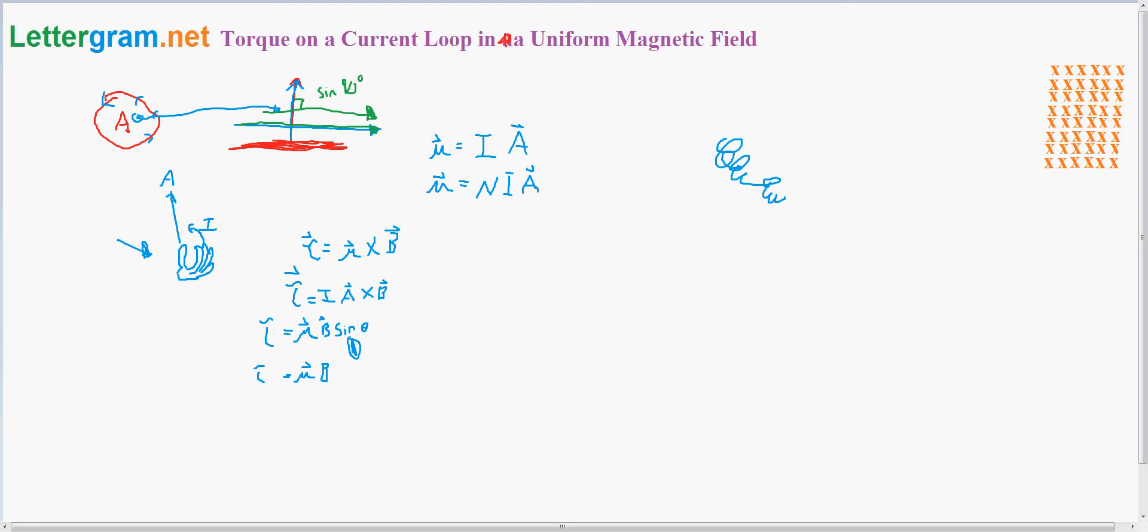So if the current's going counterclockwise, the area vector will be pointing up. If it's going clockwise, the area vector will be pointing down for a loop like this.